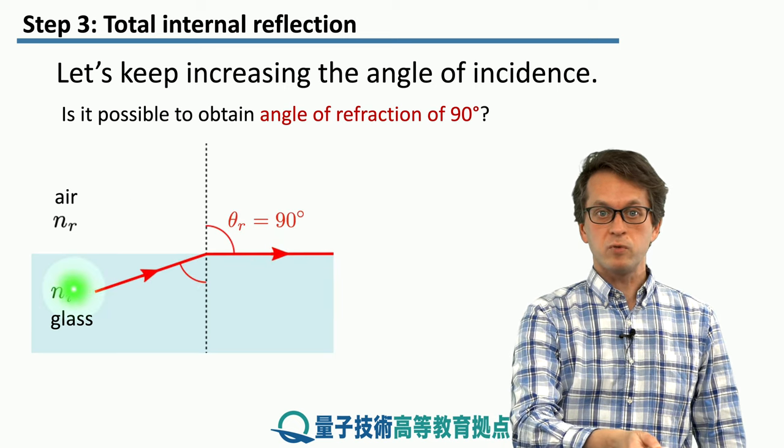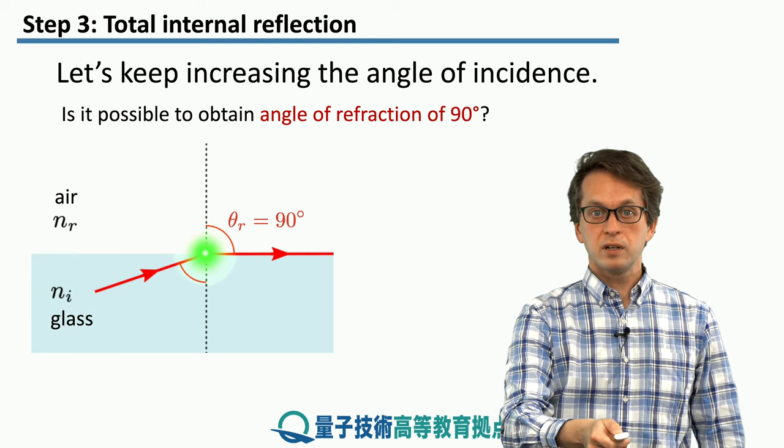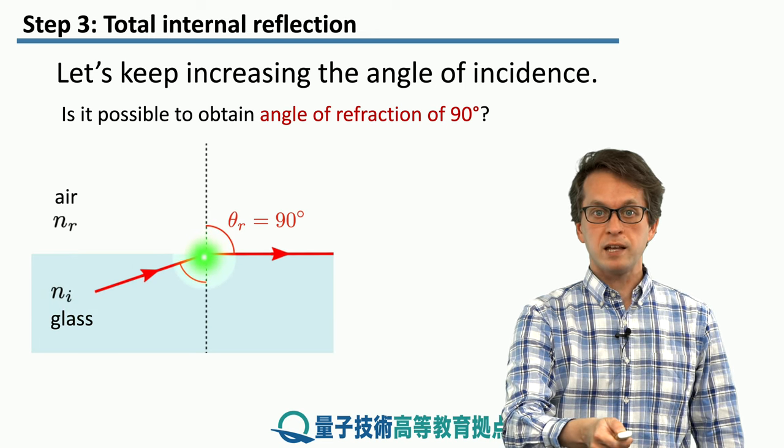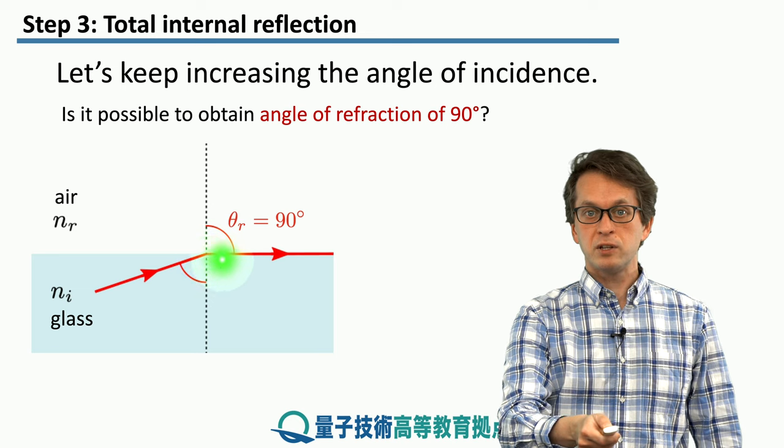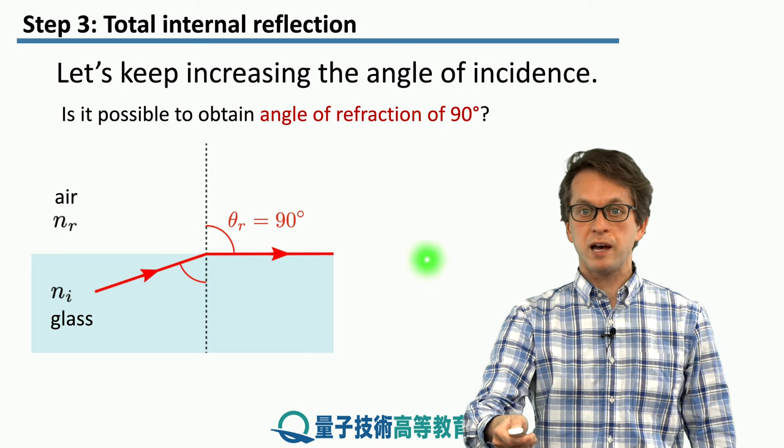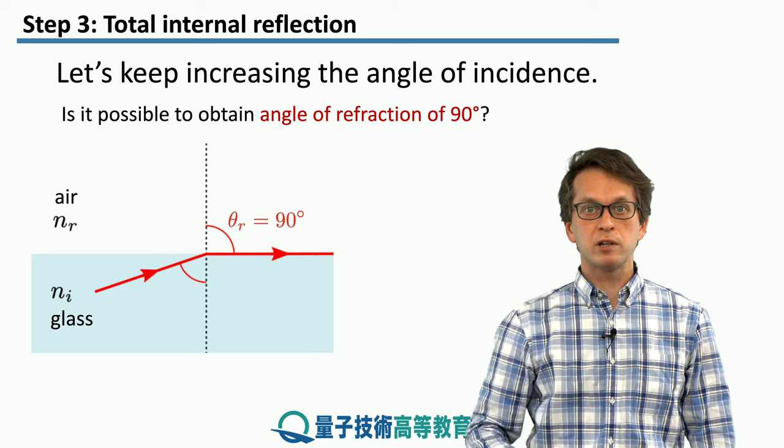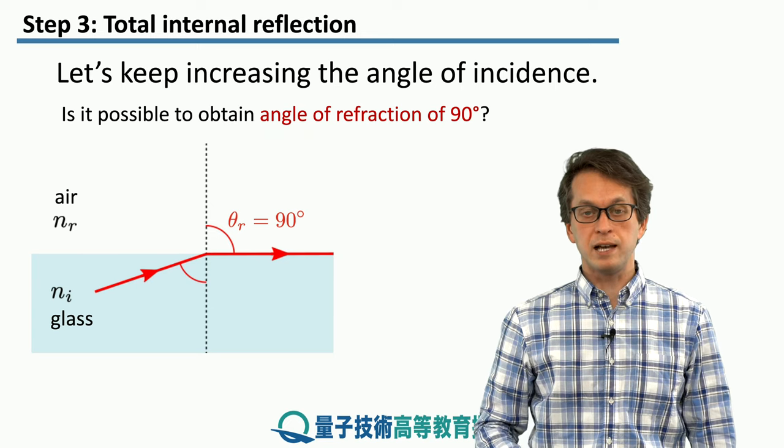So we are looking for this scenario. We have our incident beam hitting the interface between glass and air at such an angle such that the refracted beam travels at 90 degrees to the normal or parallel to the surface between air and glass.